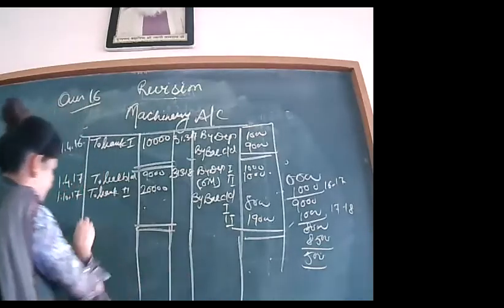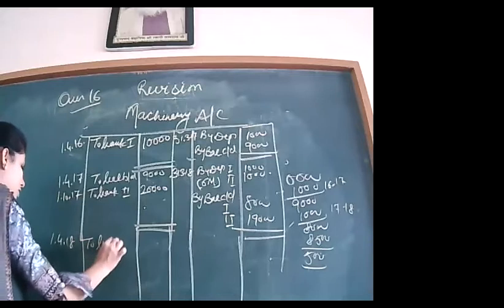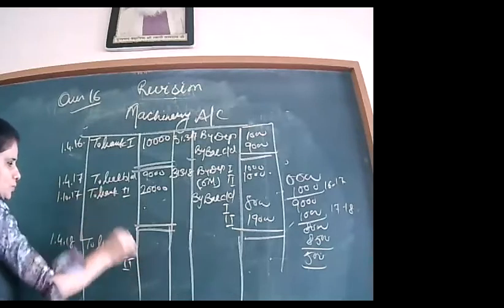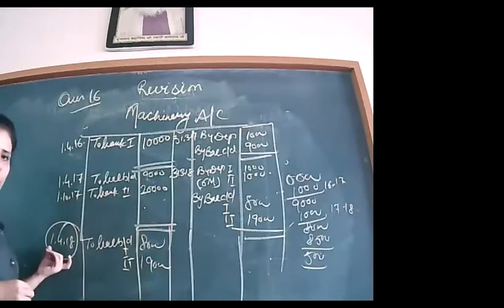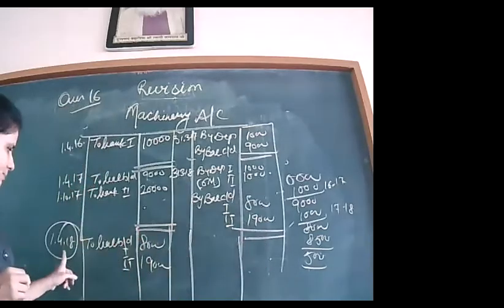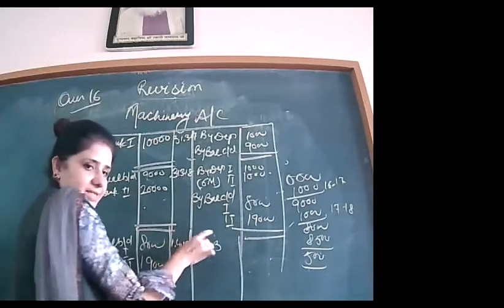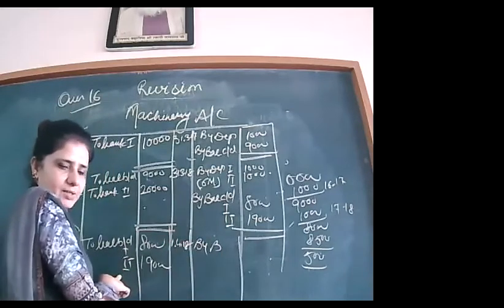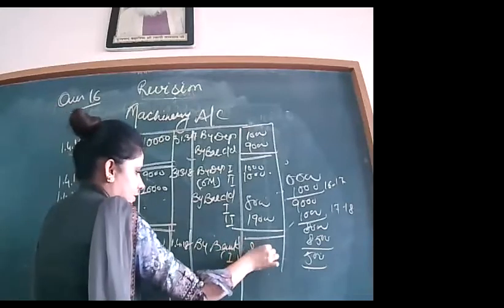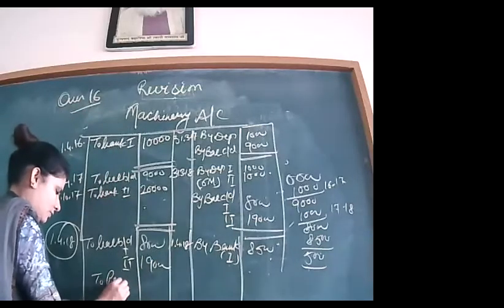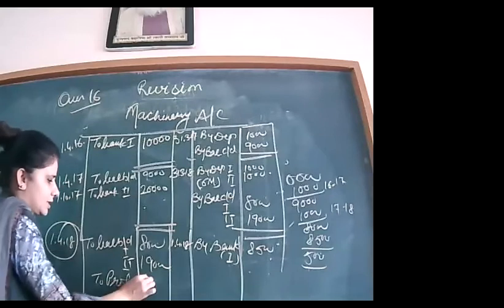In year 3 (2018–19), bring forward opening balances: Machine 1 — ₹8,000; Machine 2 — ₹19,000. On 1st April 2018, sell Machine 1 for ₹8,500 — By Bank ₹8,500, and since it is a profit, To Profit & Loss Account — ₹500 on the debit side.